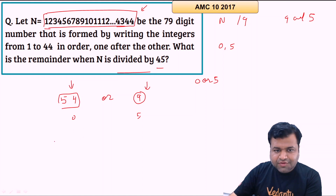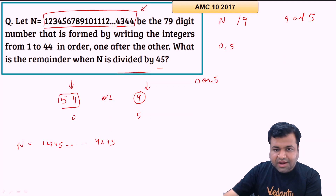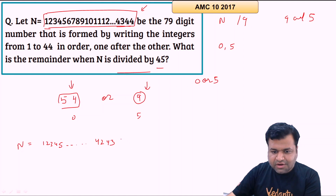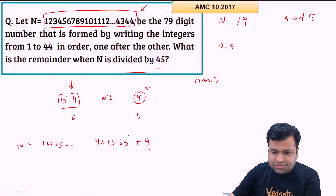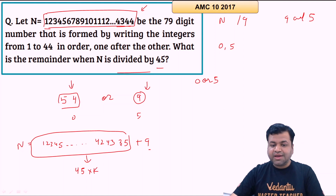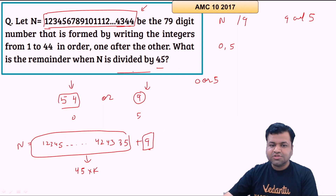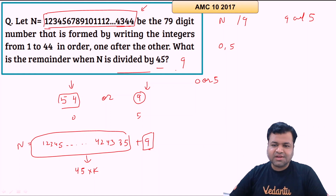Let's subtract 9 from N. We can rewrite N as 123...4243(44−9) = 123...424335. This number is divisible by 9 (since N is divisible by 9 and we subtracted 9) and its last digit is 5, so it's also divisible by 5. Therefore it's divisible by 45. That means N − 9 is a multiple of 45, so the remainder when N is divided by 45 is 9.